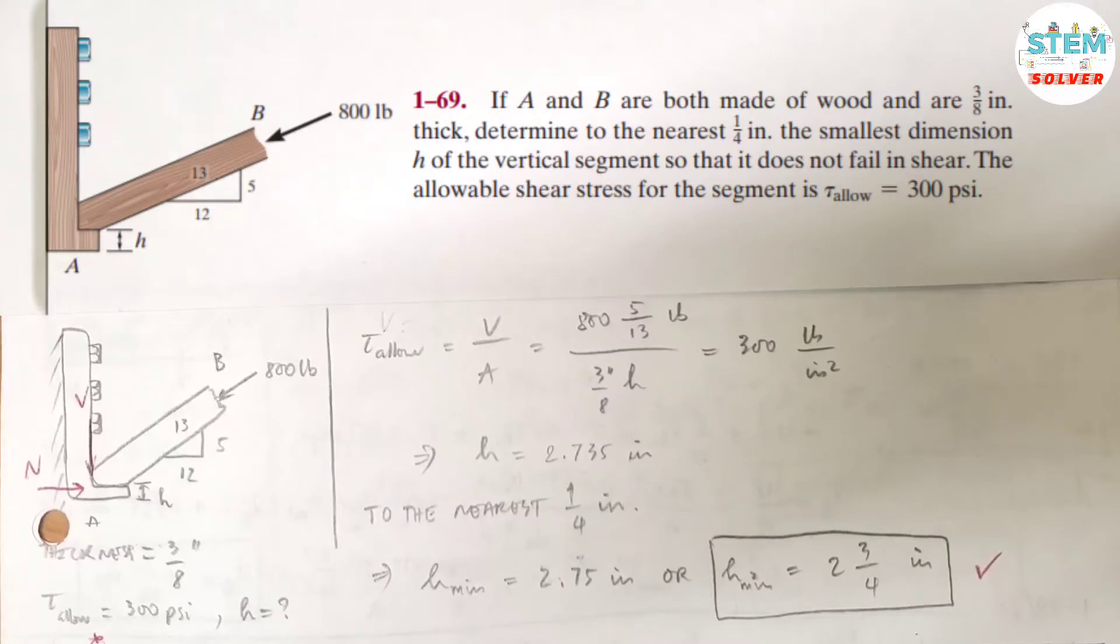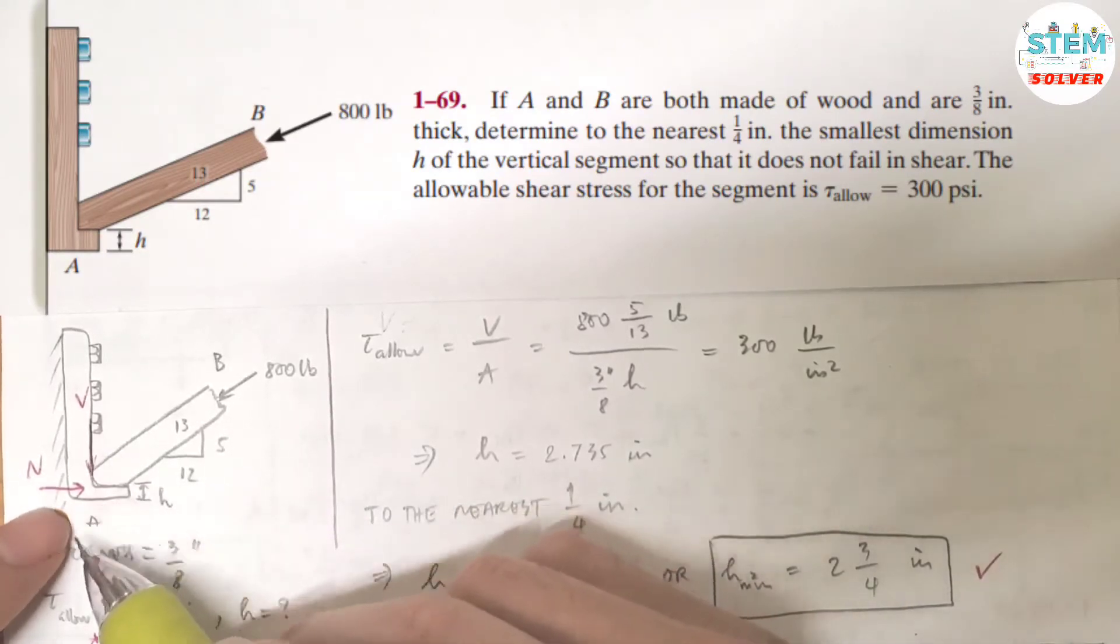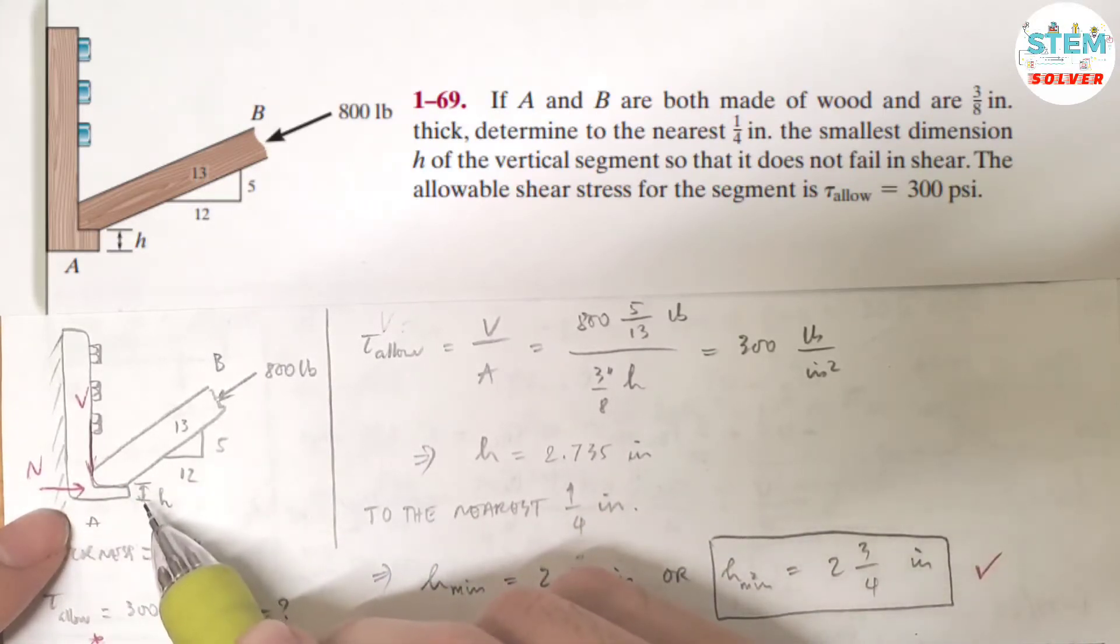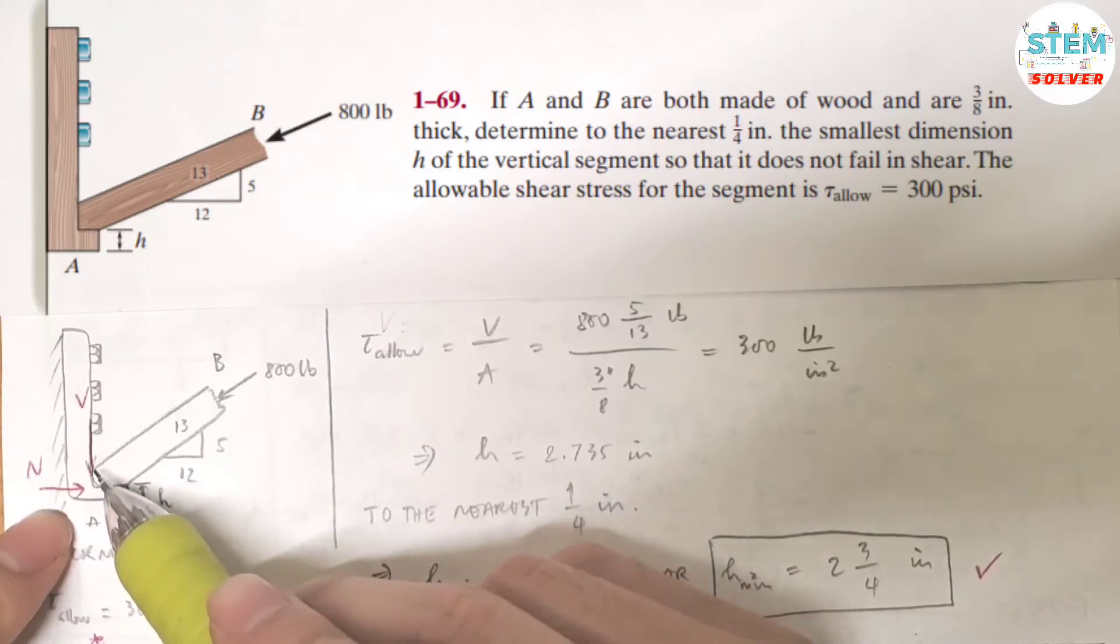So here is the free body diagram for it, actually it's the figure for it. So you have to find the minimum thickness of H so that it will not fail the allowable shear stress.